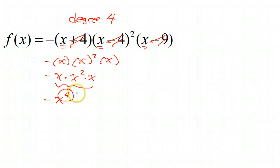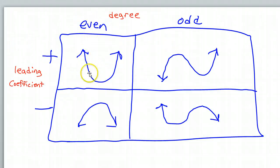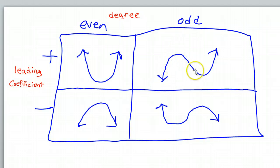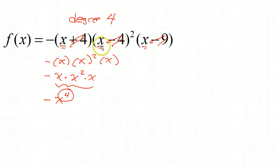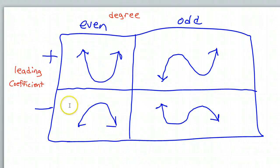Remember, if you have even degree like this, the end behavior is going to work like a parabola. If you had even degree, the end behavior would be like a parabola — either upward facing if it had a positive leading coefficient, or downward facing if it had a negative leading coefficient. If the degree is odd, the end behavior works differently: positive is like a capital N, negative leading coefficient is like an upside down N. This is even and it has a negative leading coefficient, so that tells me it's going to be this type of end behavior.